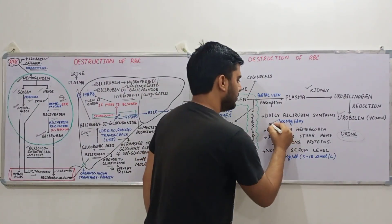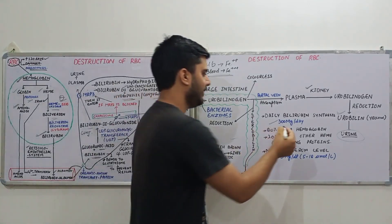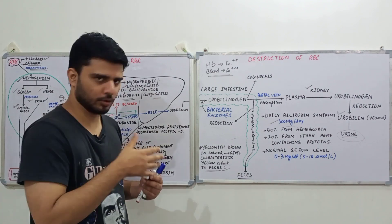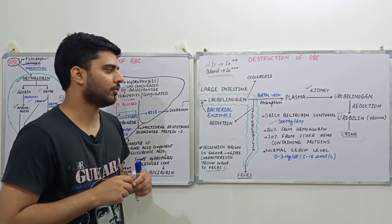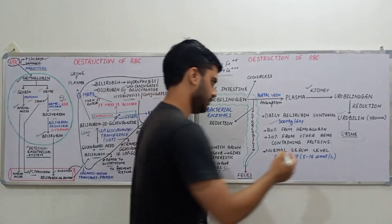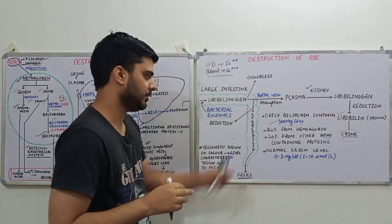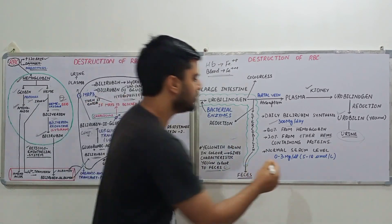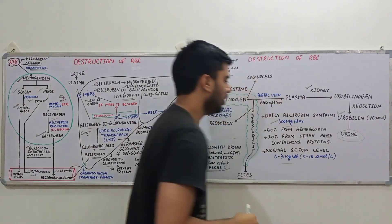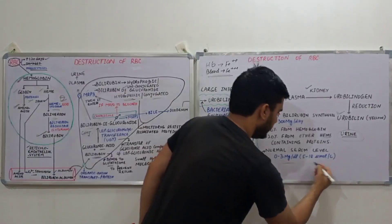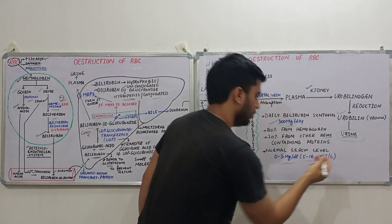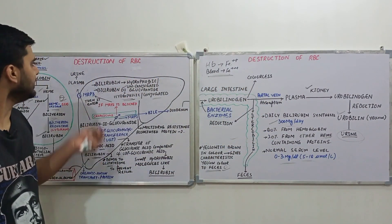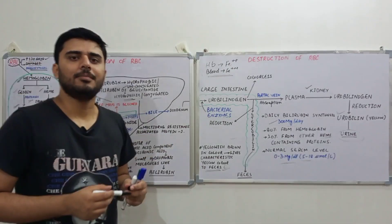The daily production of bilirubin is approximately 300 milligrams per day (range: 250–350 mg/day). About 80% is formed from hemoglobin, while 20% is formed from other heme-containing proteins. The normal serum level of bilirubin is 0.3 milligrams per deciliter, or approximately 5 to 18 micromoles per liter.